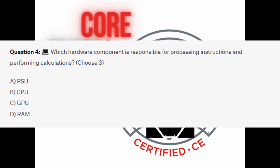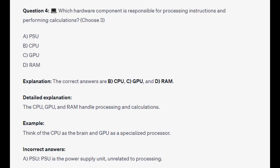Is it A: PSU. Is it B: CPU. Is it C: GPU. Or is it D: RAM. You are now on 5 seconds. And the correct answers are B, C and D: CPU, GPU and RAM.